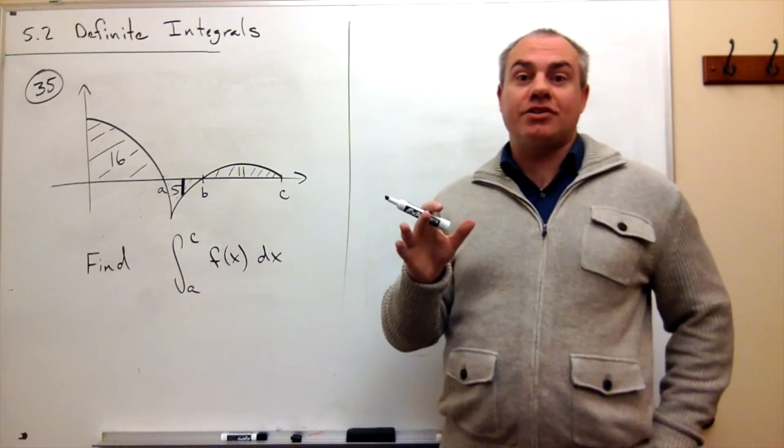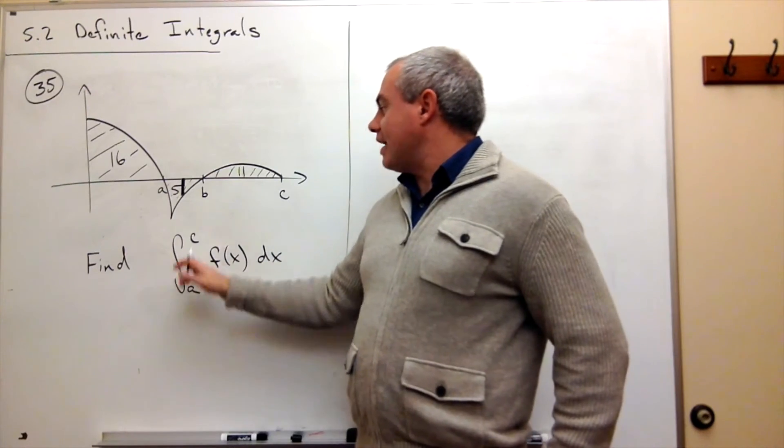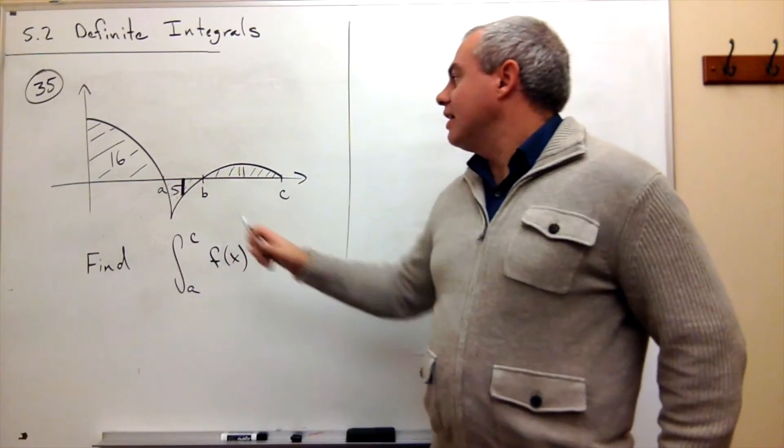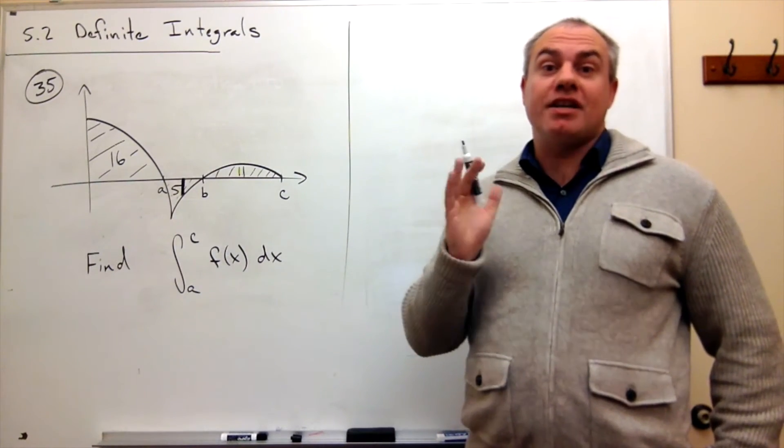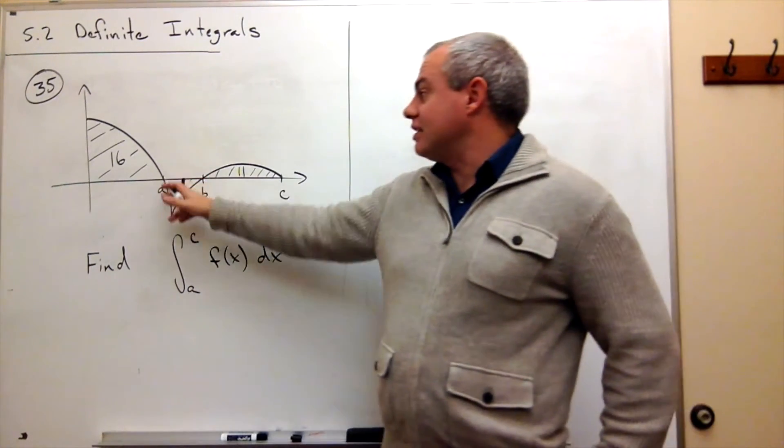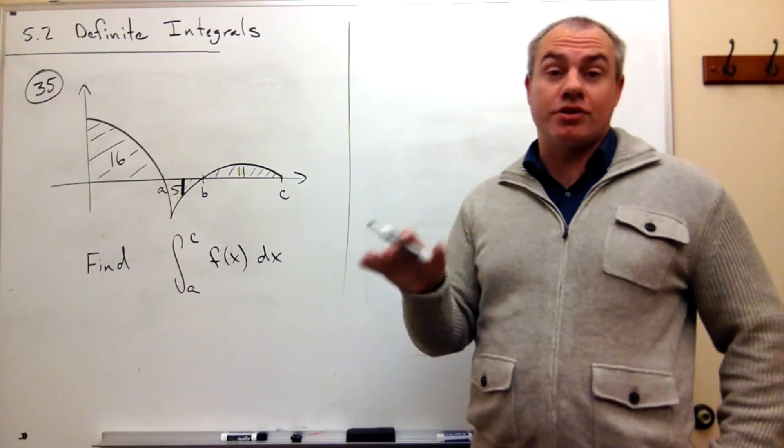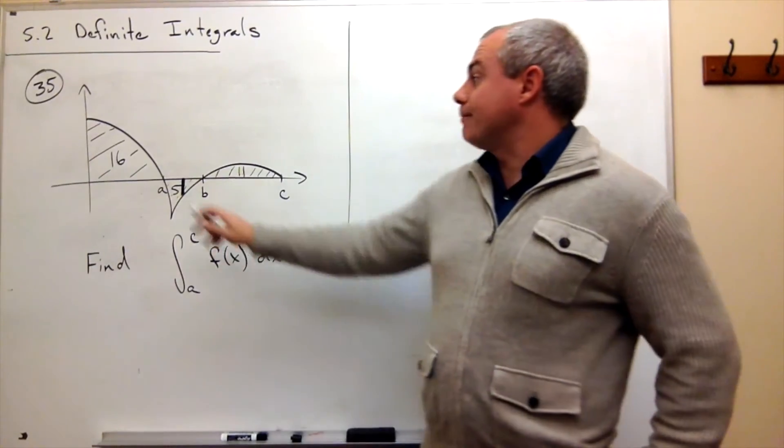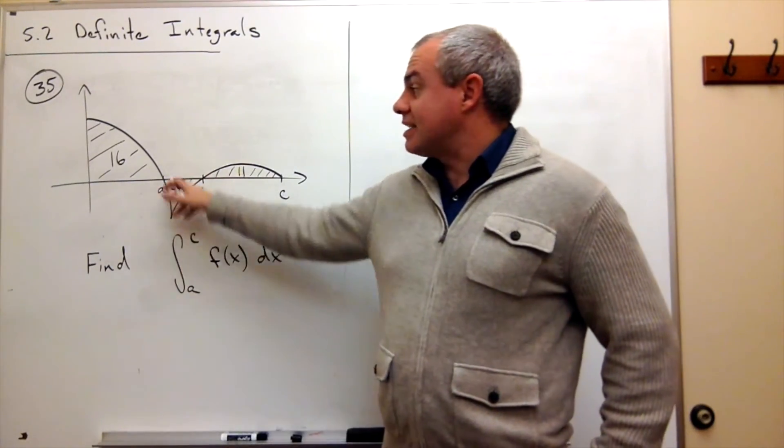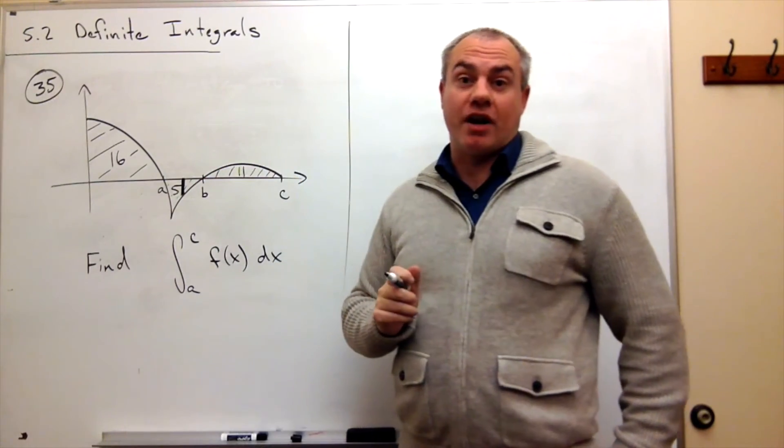So it's not actually area. I can't just say the area between A and C is 5 plus 11 equals 16 - that's wrong, because it isn't area if this dips below the x-axis. What we need to understand is: if it's below the x-axis, it's negative area; if it's above the x-axis, it's positive area.